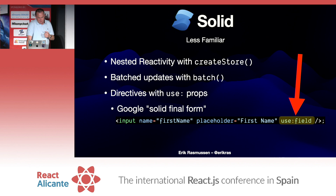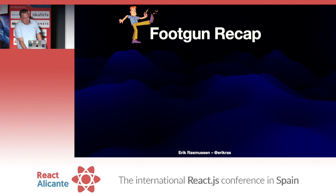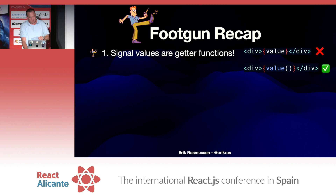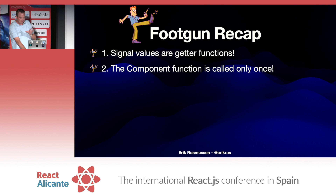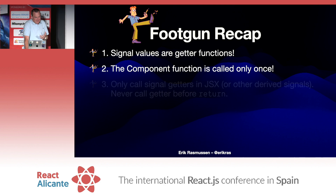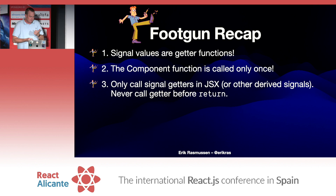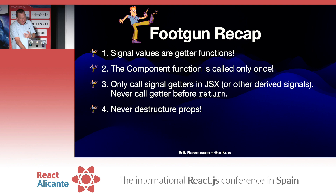Let's do a foot gun recap. One: signal values are getter functions — they aren't the actual value. Two: the component function is only called once — that's the crazy thing, but it's where the power of Solid comes from. Three: you should only get the value of signals either in JSX or in other derived signals — never call a getter before the return in your component. Four: never destructure props.